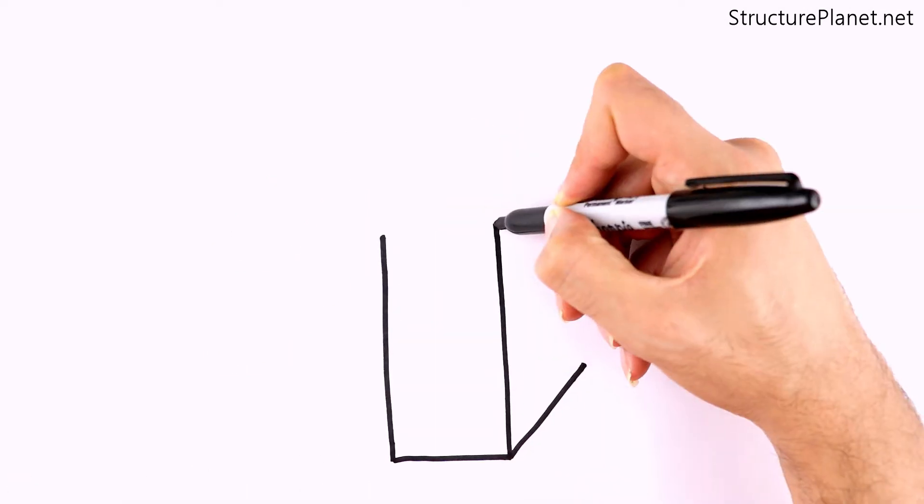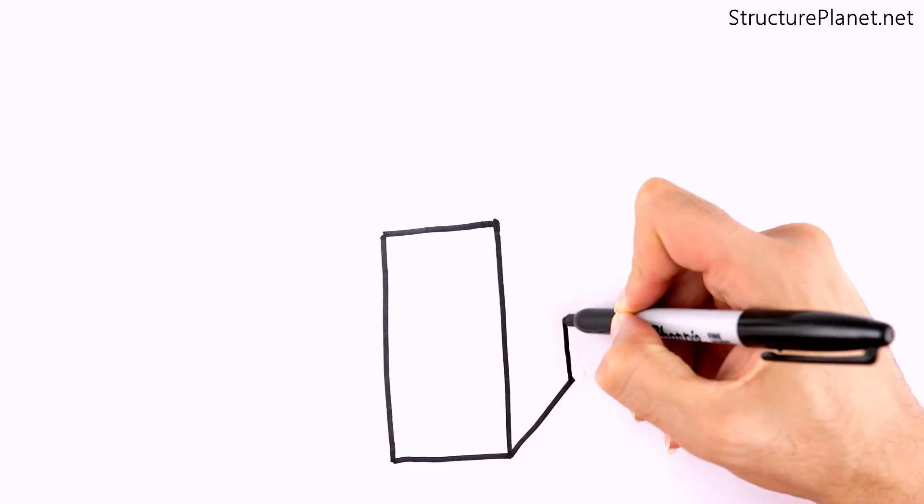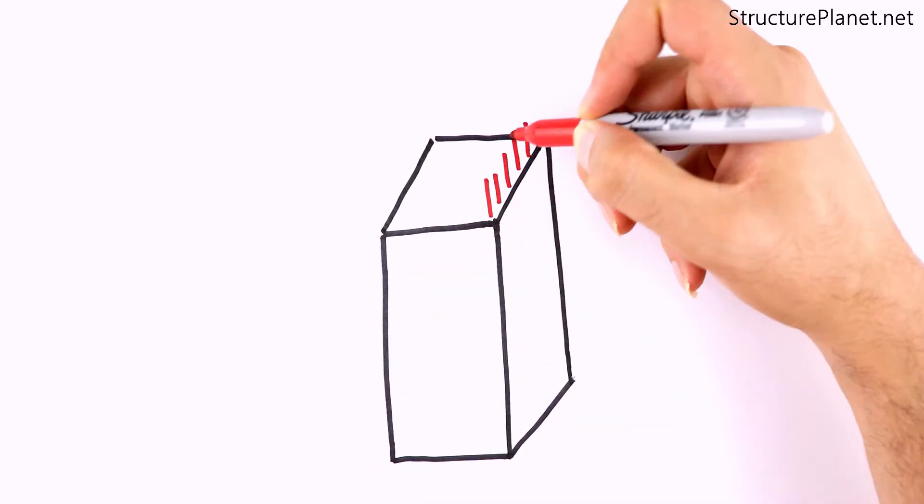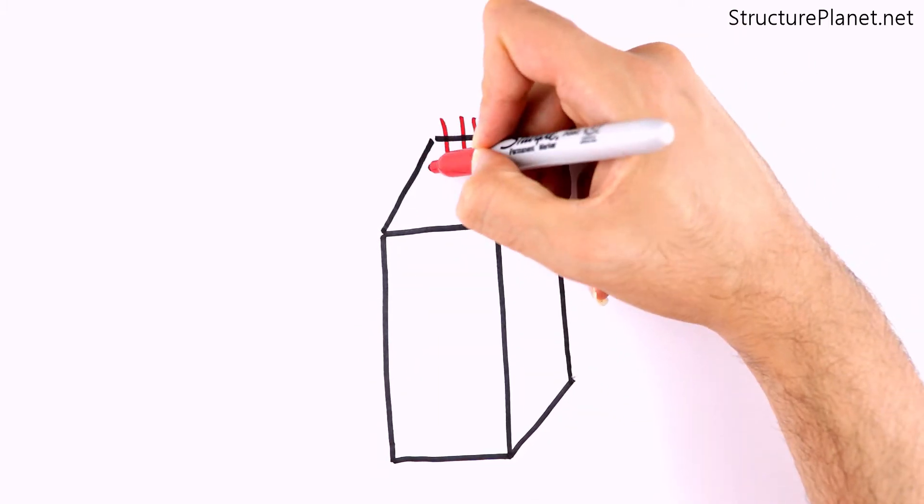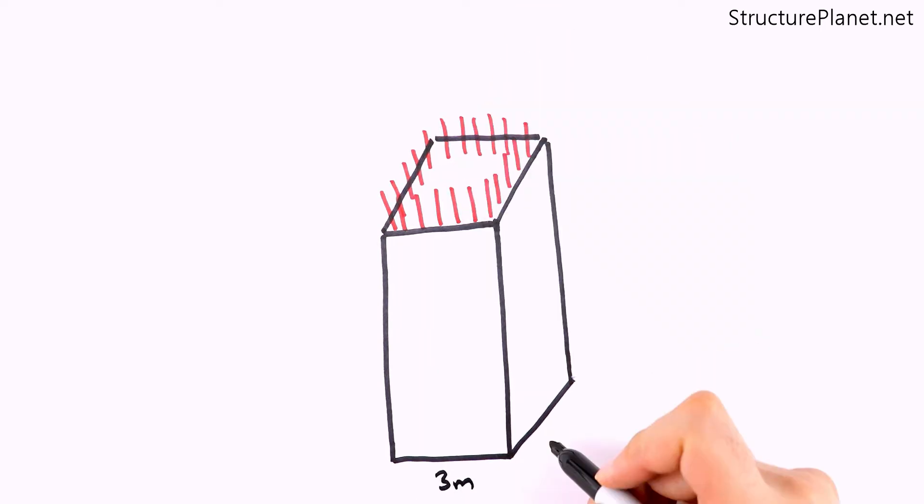Tall buildings will also have very large columns, which are sometimes called mega columns. Engineers use high strength concrete for these columns too to reduce the size as much as possible. To give an insight, mega column sizes of 3 meters by 3 meters or 10 feet by 10 feet are not uncommon at lower levels of a 600 meter tall concrete building.